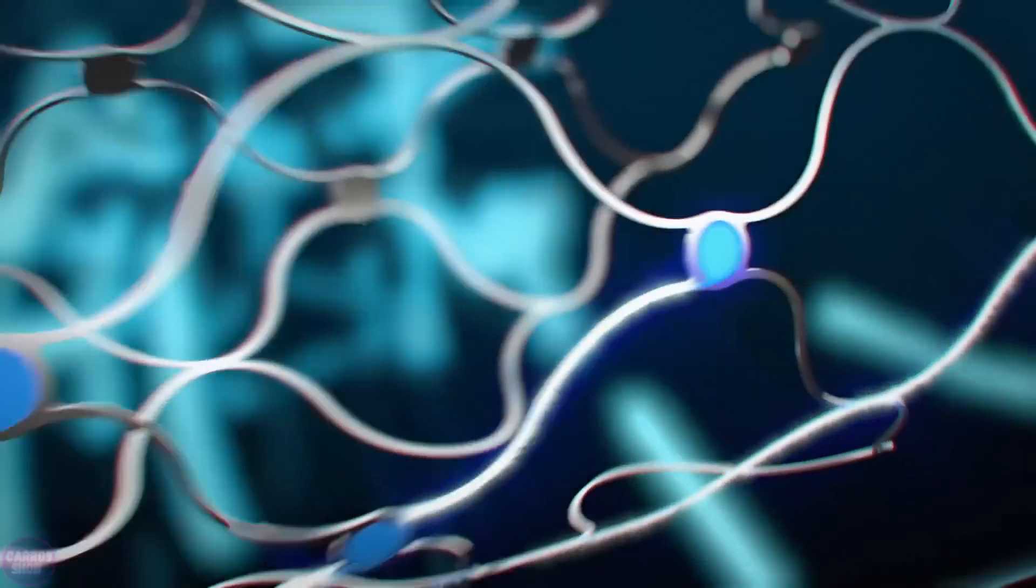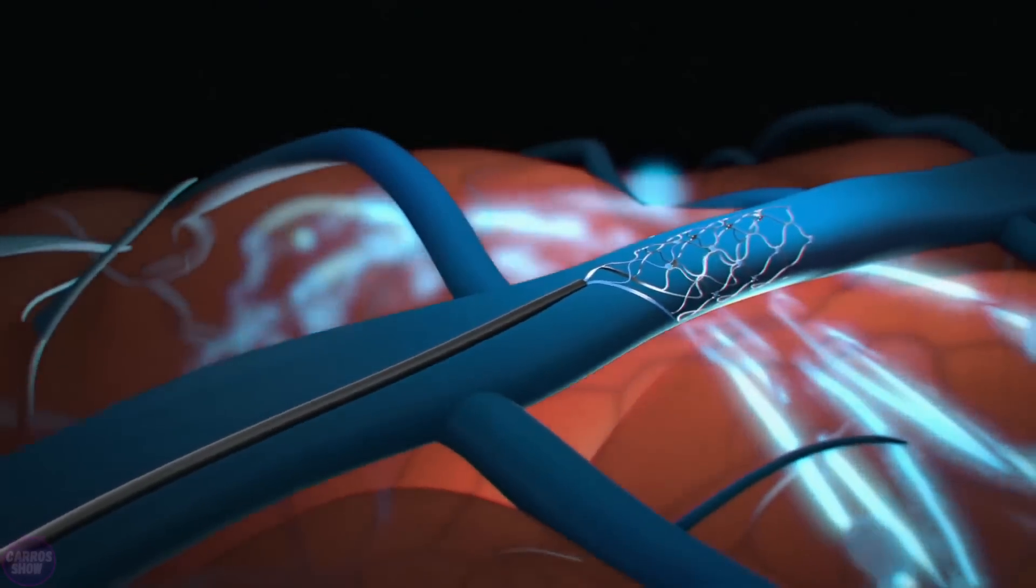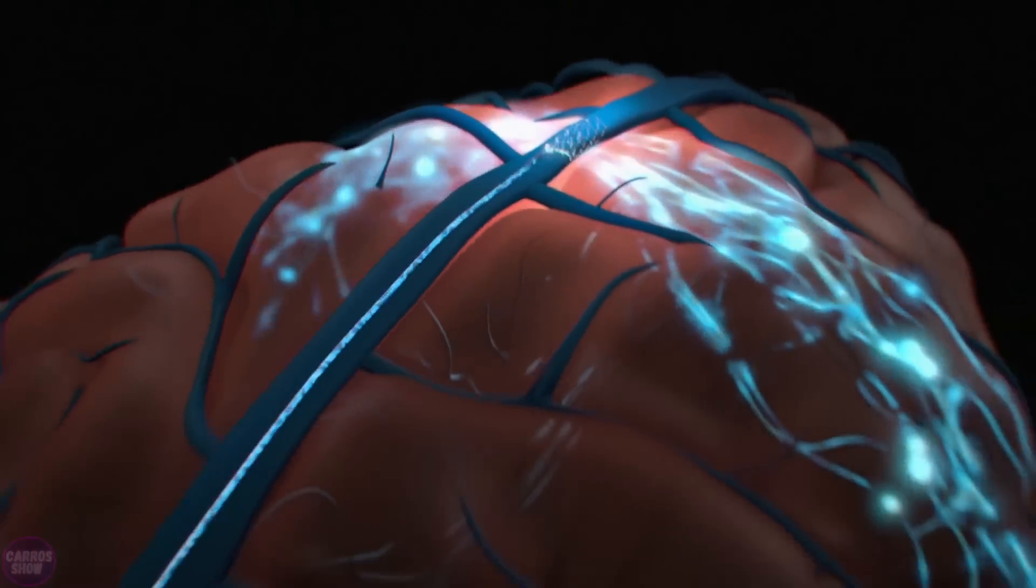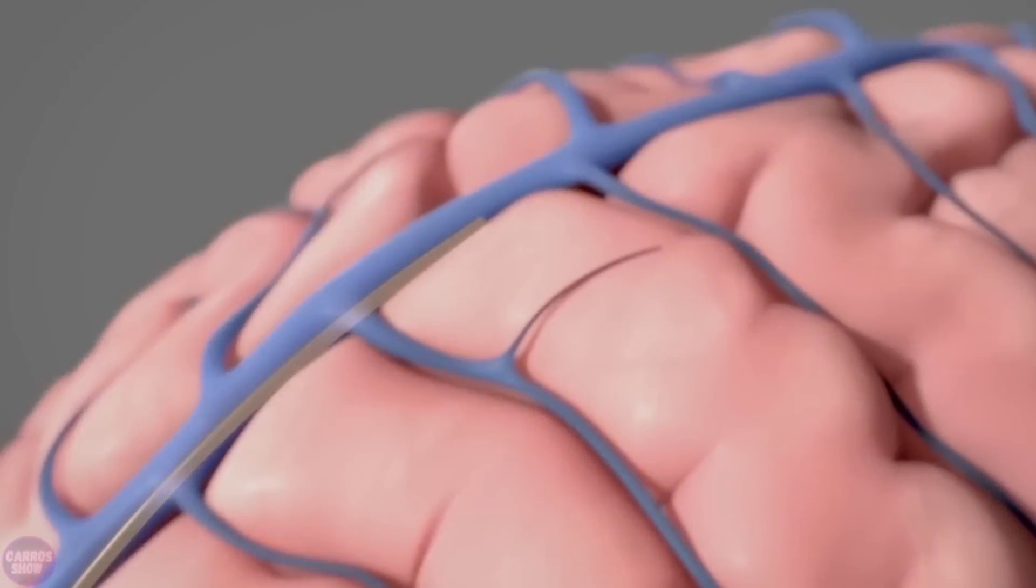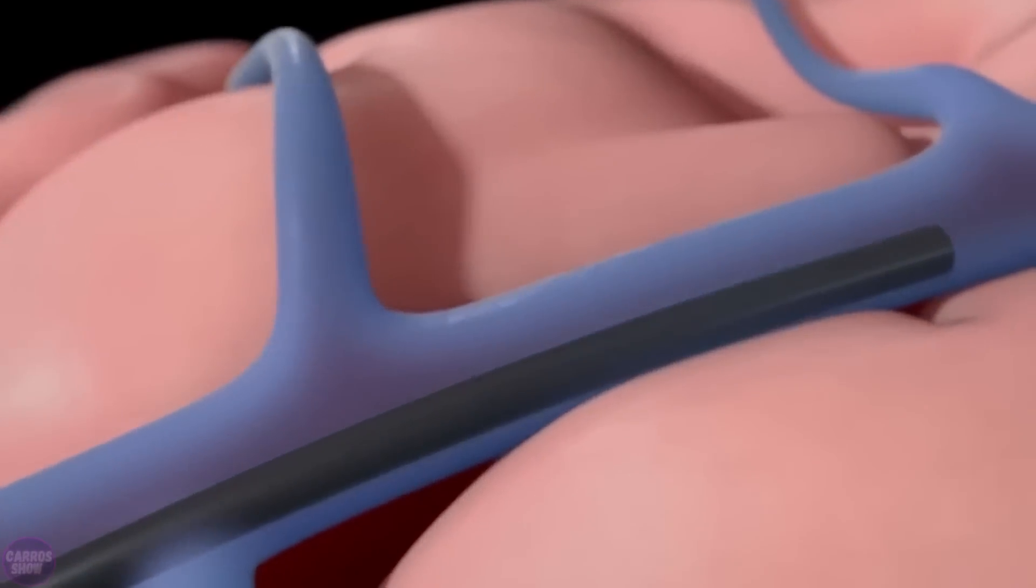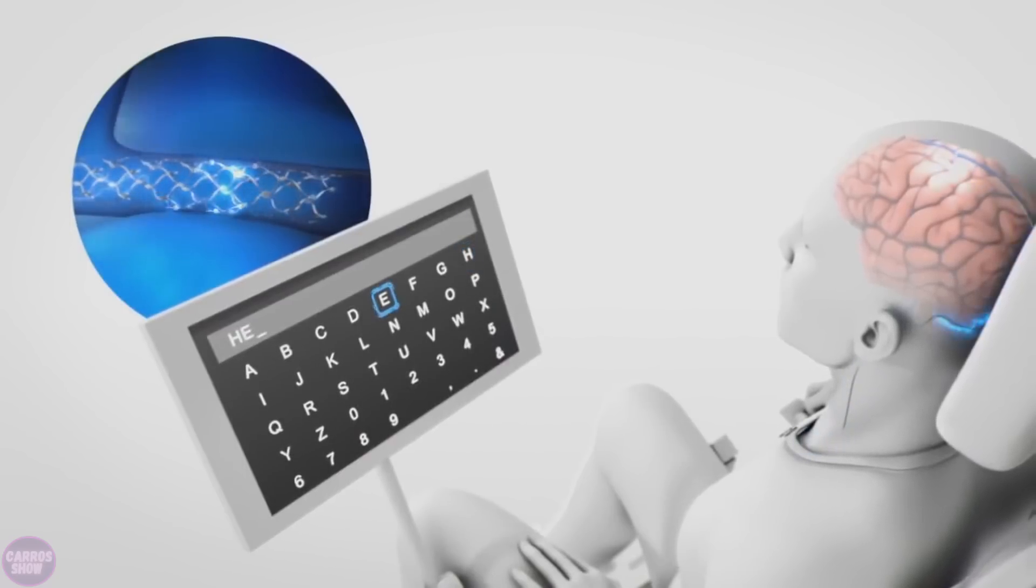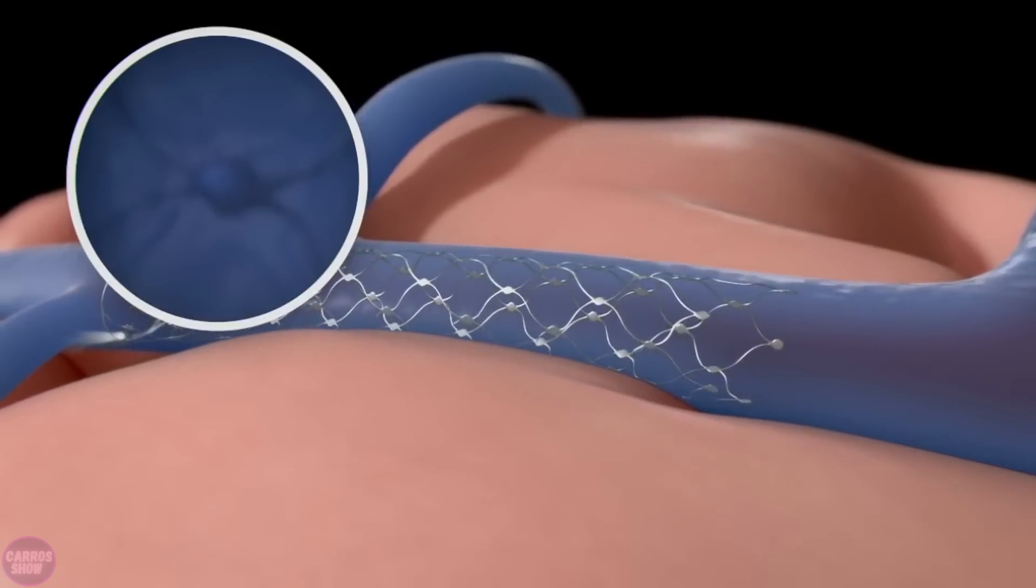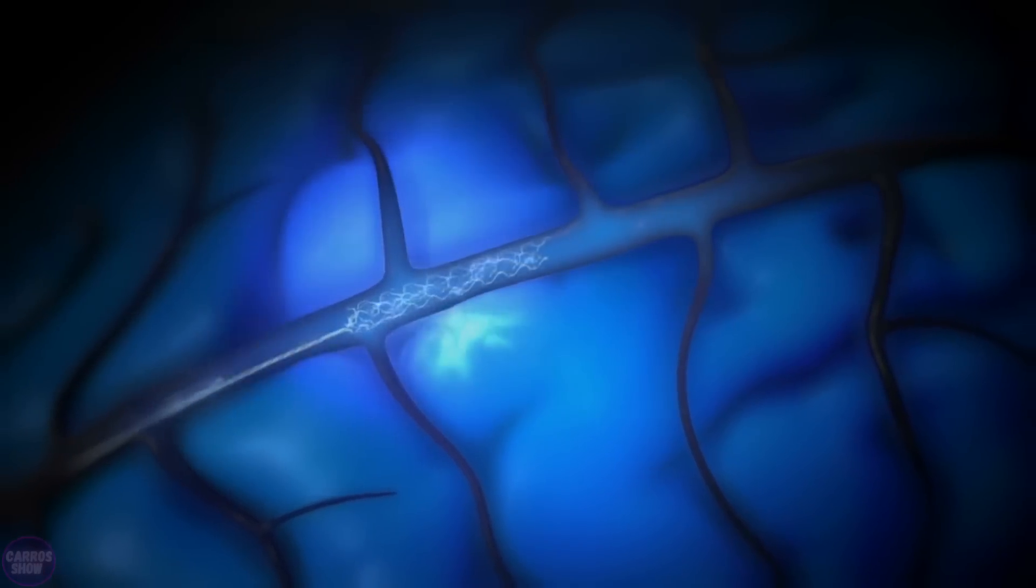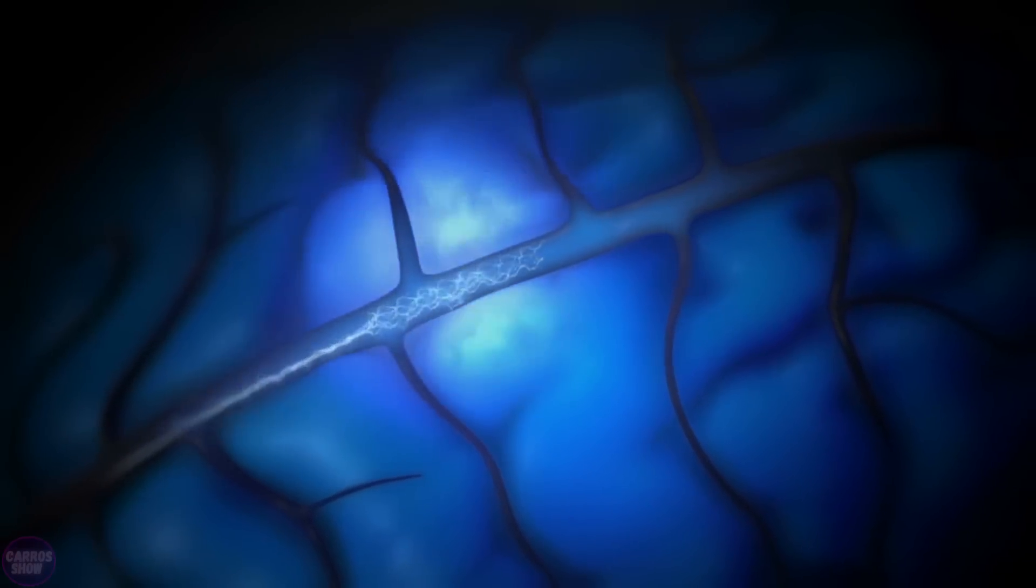Meanwhile, competitors are stepping on the company's toes. For example, Synchron has already received approval for human testing. Its brain-computer interface implant does not require brain surgery, but allows paralyzed people to type on a computer with their thoughts. Recall that despite plans to store computer memory and put people with spinal cord injuries on their feet, Neuralink's first goal was also to print text on various devices.